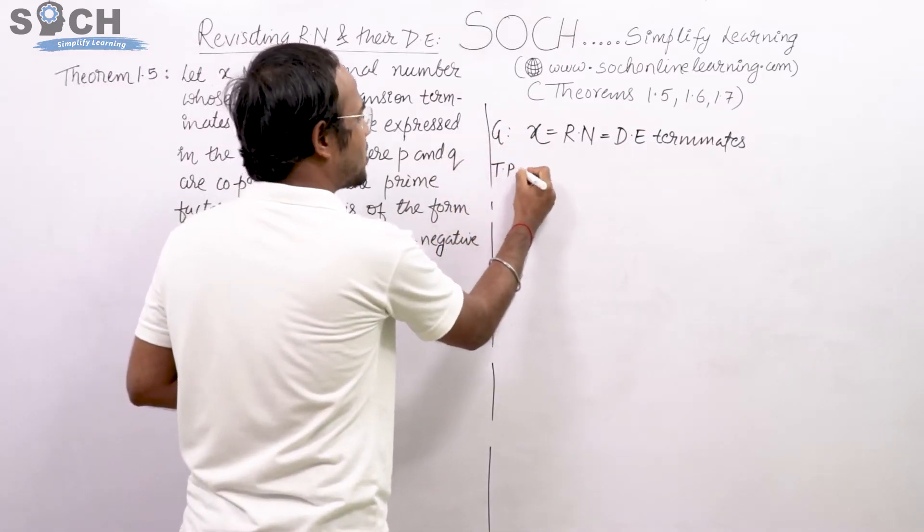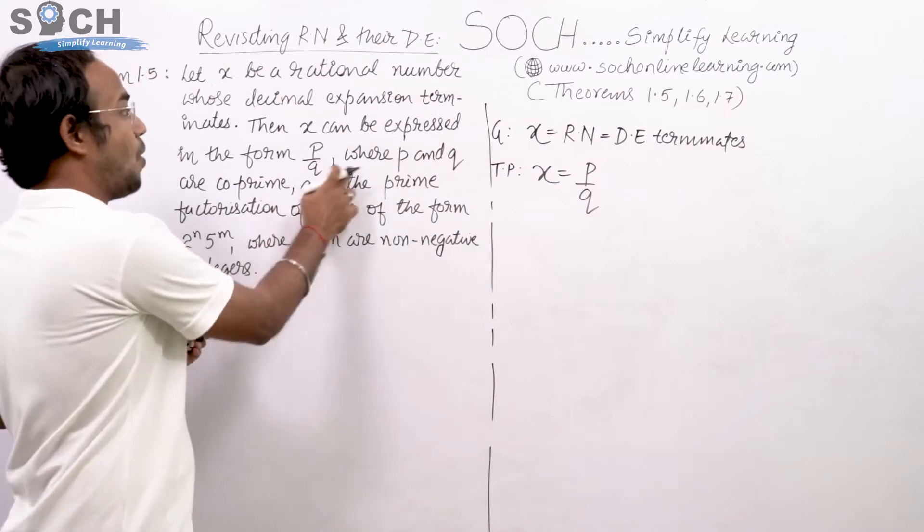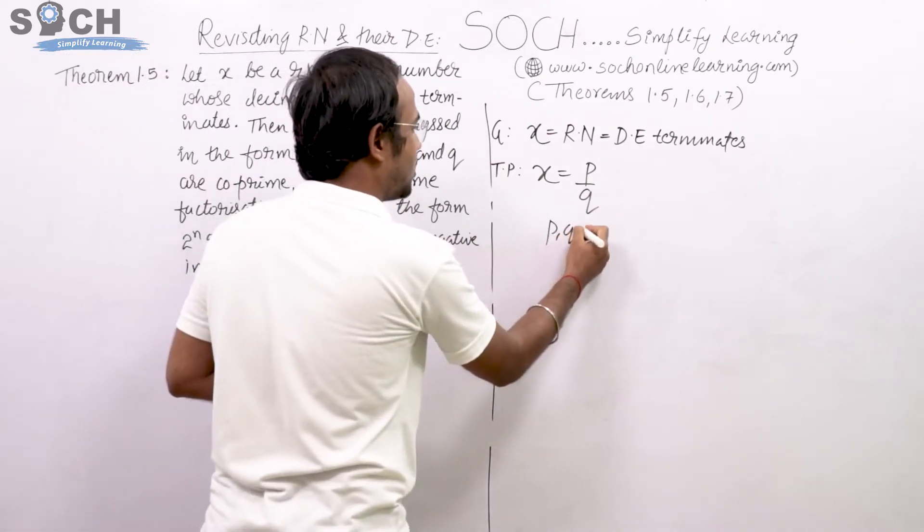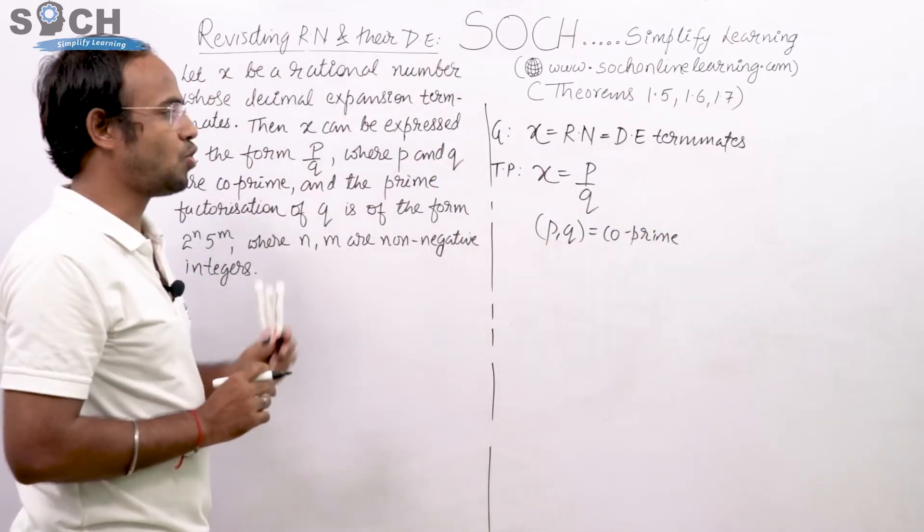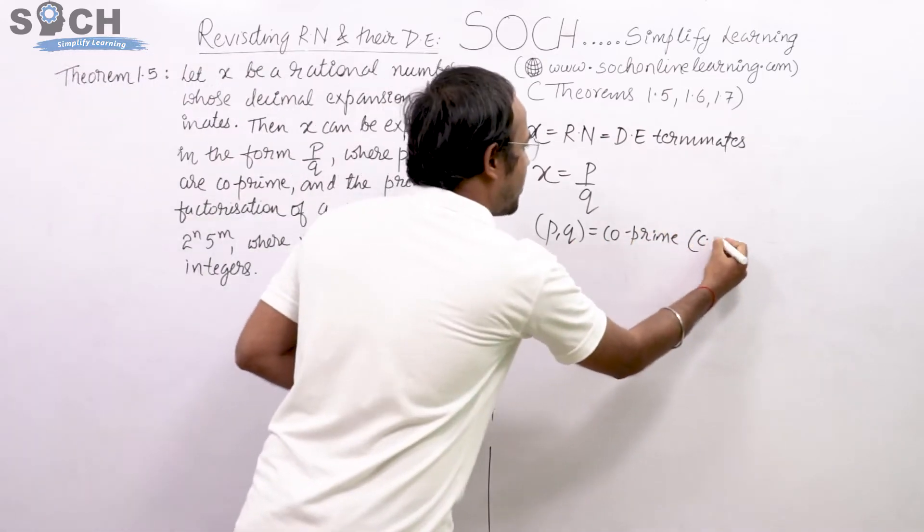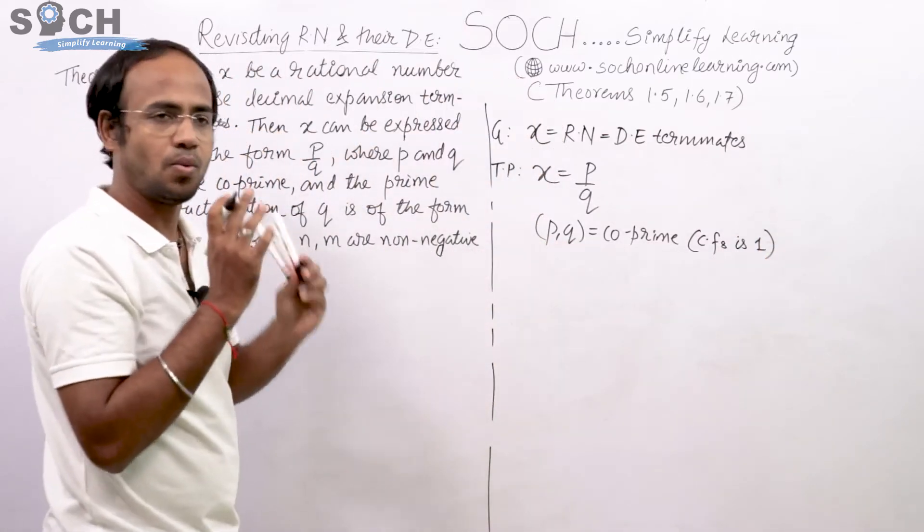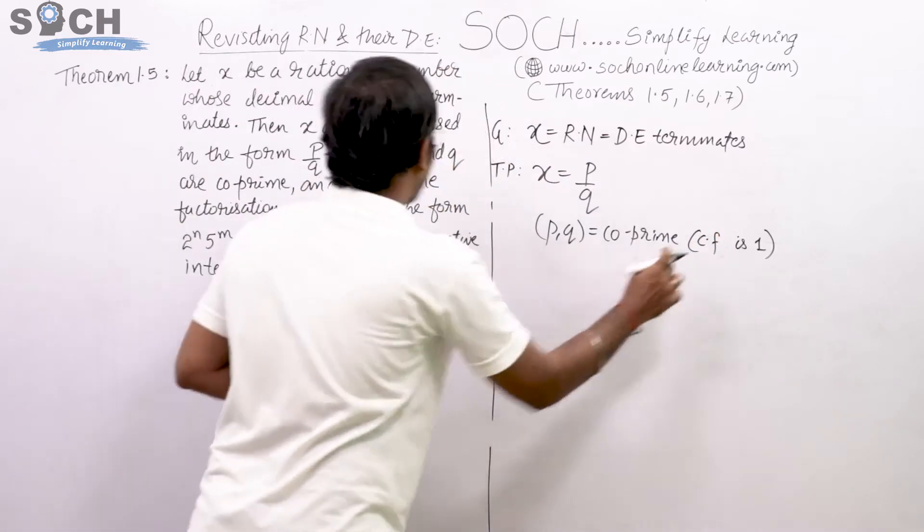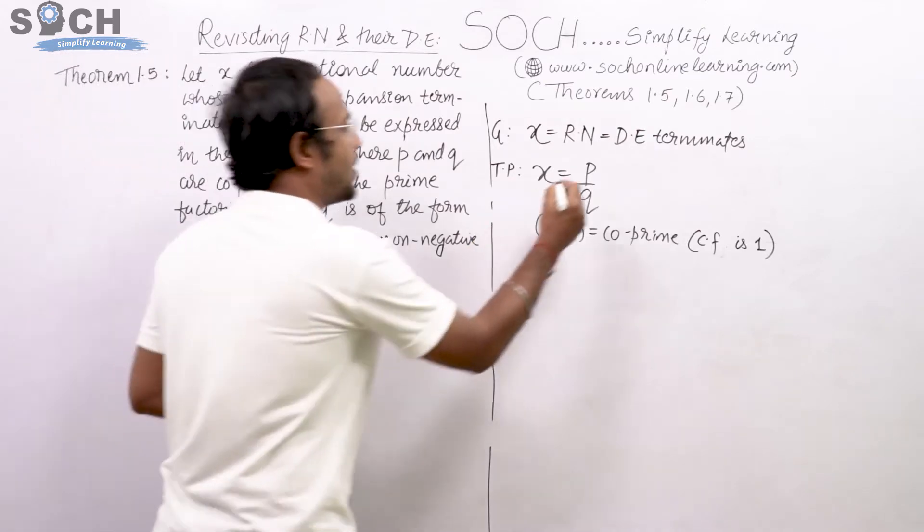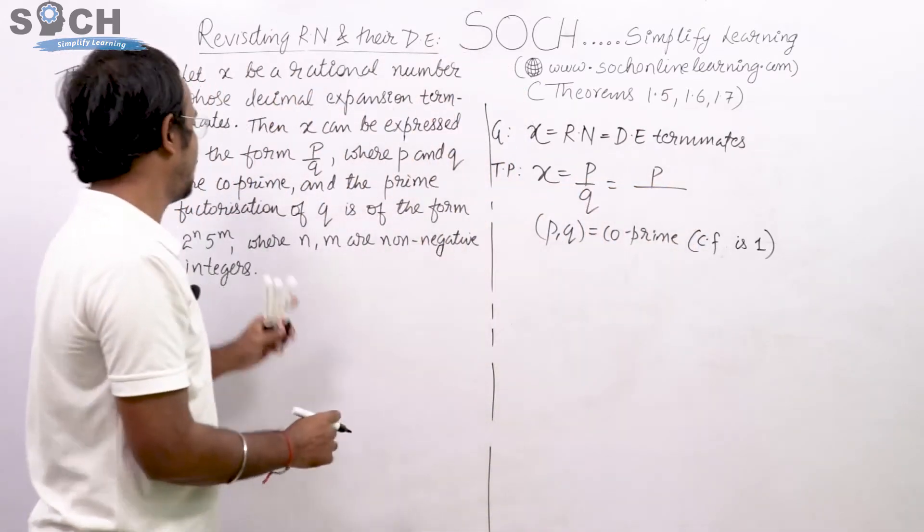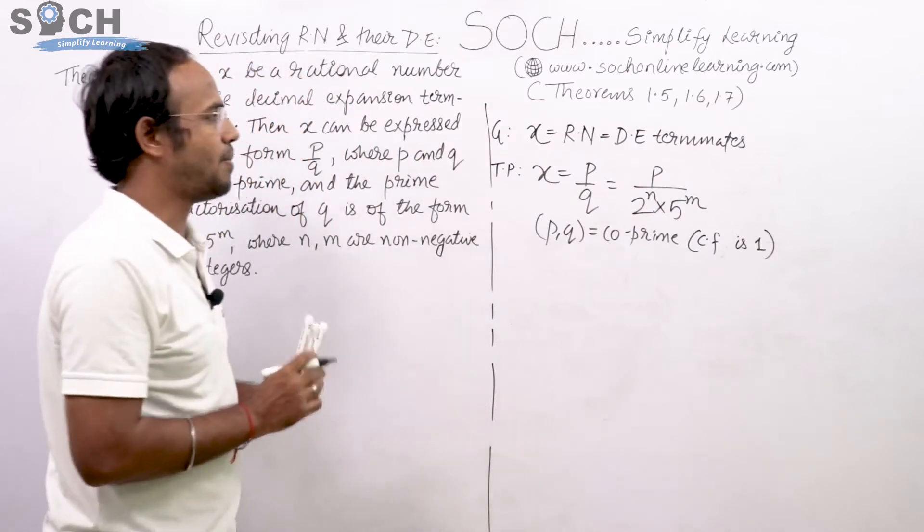Then X can be expressed in the form P by Q where P and Q are co-primes. Co-primes are those numbers whose common factors is 1. And the prime factorization of Q is of the form 2 raised to N and 5 raised to M. This is the theorem.